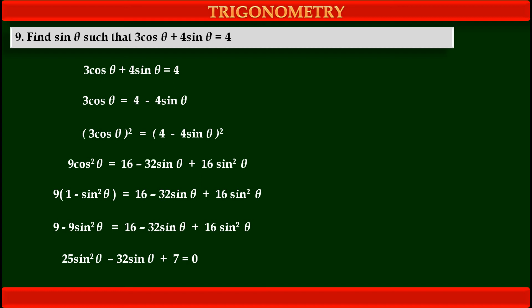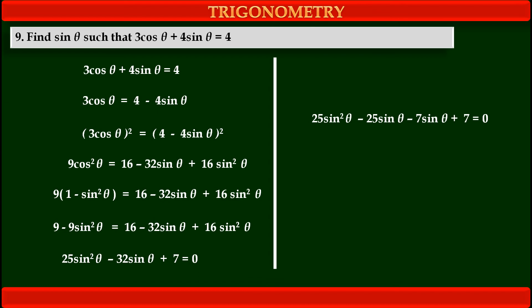Now we have to factorize it. We have to split the middle term into two parts so that the sum of the coefficients equals minus 32, and the product of the coefficients equals the product of the first and last coefficients, that is 25 times 7. So after splitting, we write 25sin²theta minus 25sin theta minus 7sin theta plus 7 equals 0. The two middle terms minus 25sin theta and minus 7sin theta sum to minus 32sin theta, and their product equals 25 times 7.